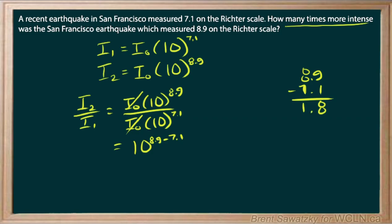So what we can do is we can just say that that's equal to 10 to the 1.8. And so we can pull out our calculator at that point, and 10 to the power of 1.8, and we get 63.